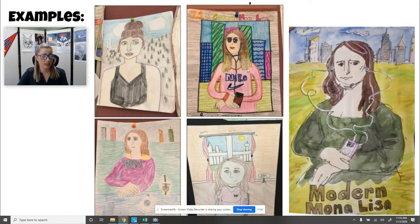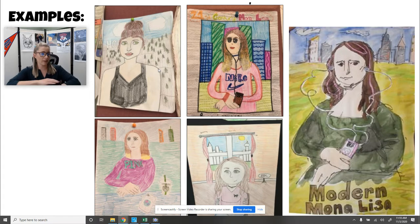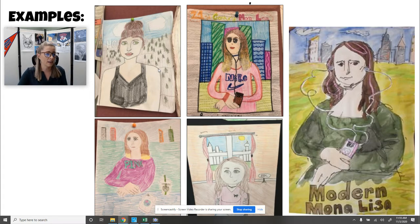This one has Nike and is listening to headphones. This one has her hair up in a bun, still in kind of the same pose, with arms drawn similarly to how Mona Lisa did. These are student examples.